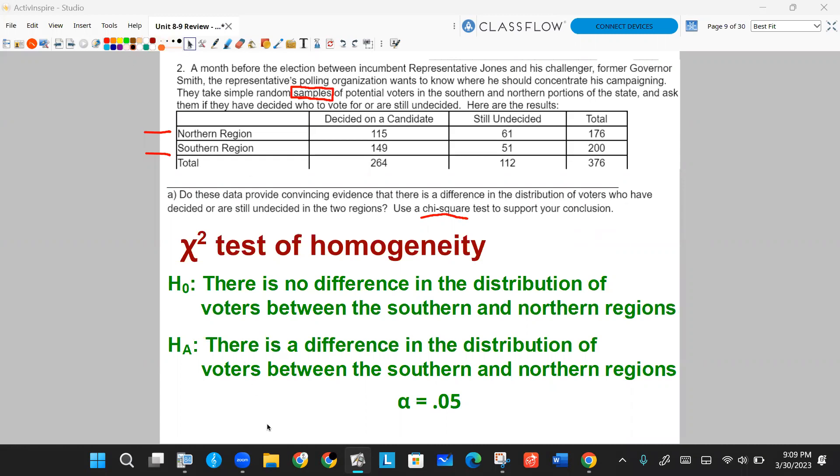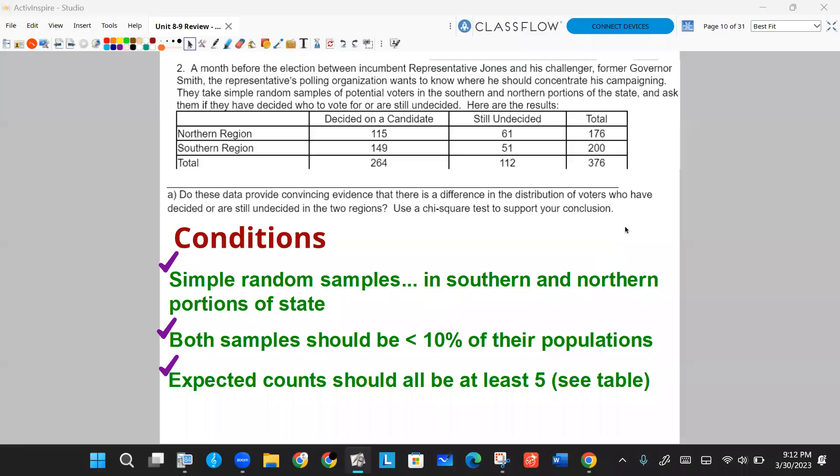Let's check your conditions. We want to make sure we're meeting our random 10% condition and expected counts in this case. It does tell us here that there are simple random samples of potential voters in the southern and northern portions of the state. So we do have two simple random samples. Both samples, we can assume, are going to be less than 10% of their populations. We do have to show our expected counts. And with the matrices, I like to put them right on the table. And remember, you can do your row total times your column total divided by your overall.